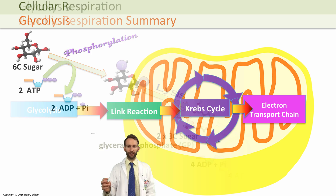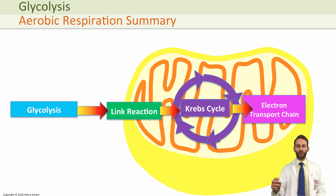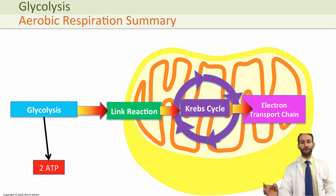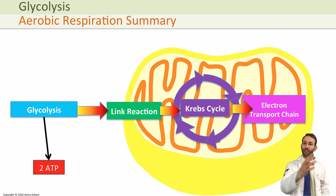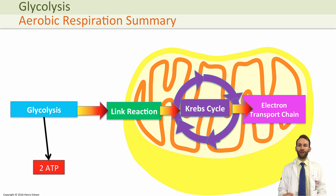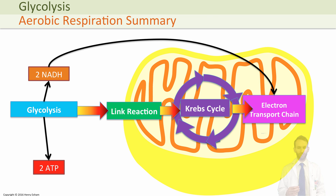Overall in glycolysis, we end up with two ATPs produced. Remember that we make four, but we had to use two initially at the beginning of the process. We also release two NADHs, which are going to go to the electron transport chain.